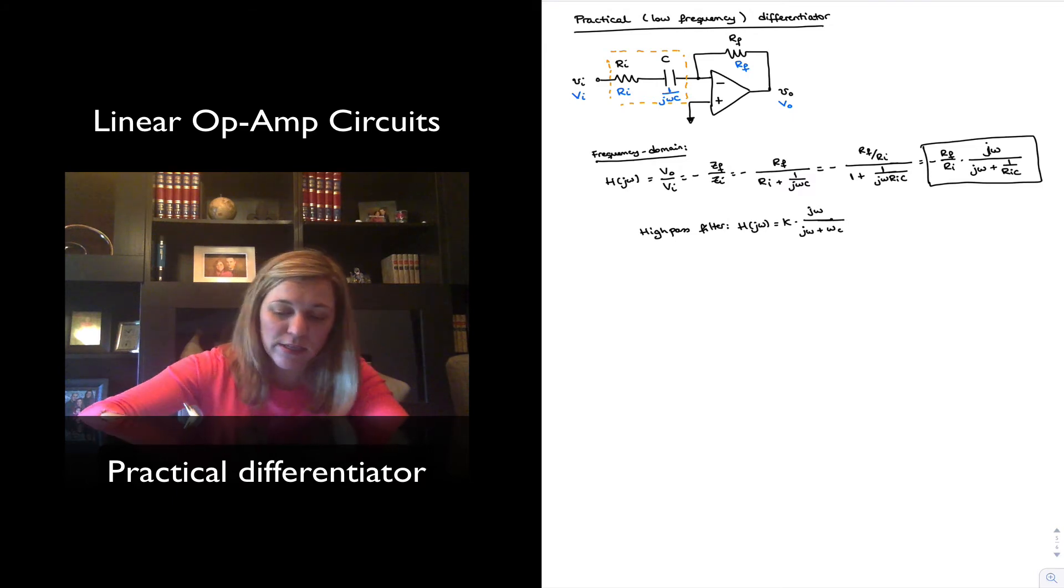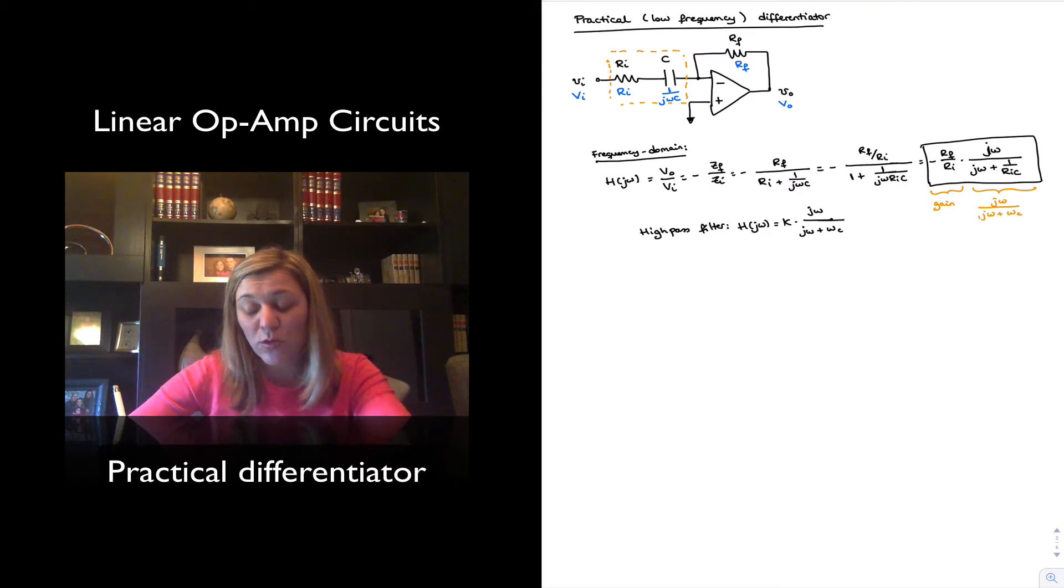In this case, this will be our gain factor, and that will be our j omega over j omega plus omega c, with omega c being equal to 1 over Ri times c.